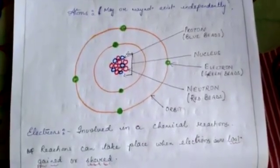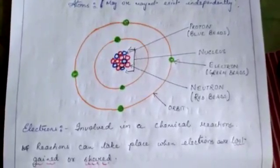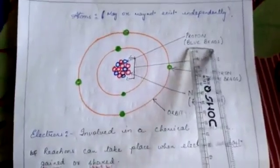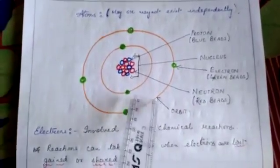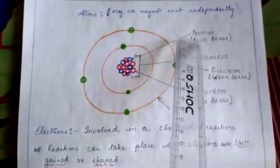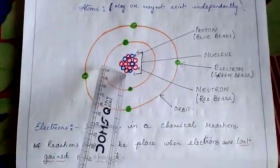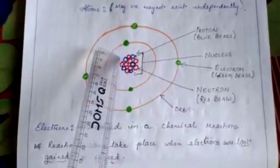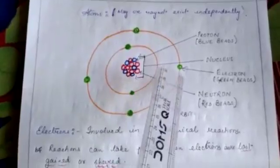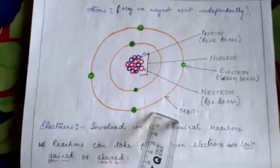We have already learned that elements are made up of atoms. Now, what is an atom made up of? An atom comprises different sections. First is its nucleus, which comprises protons — represented here as blue beads — and neutrons, represented as red beads. The atom also comprises electrons, which revolve around the nucleus in fixed orbits.